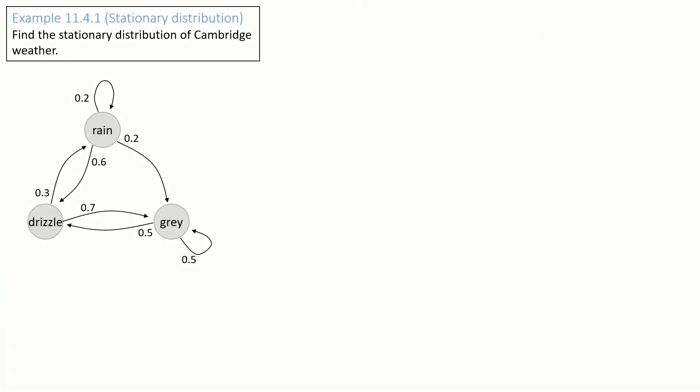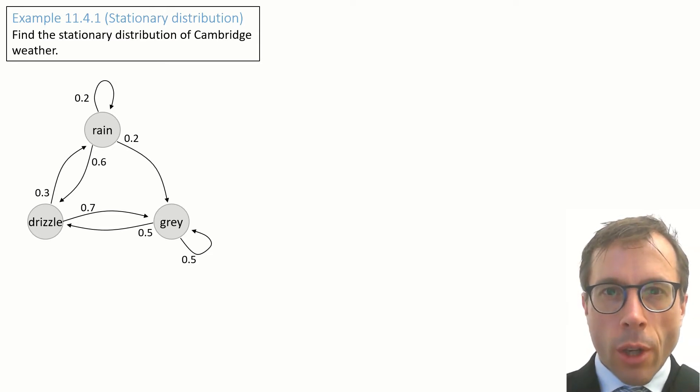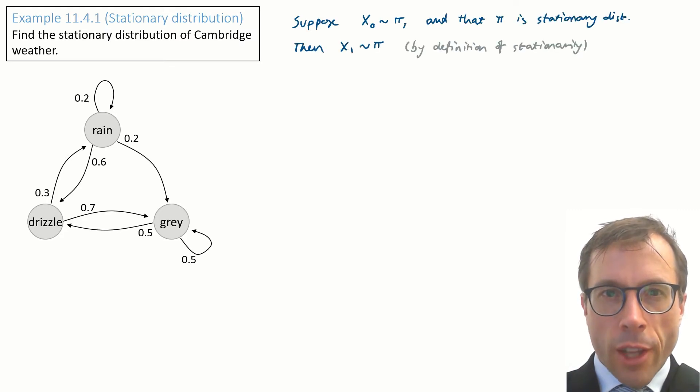Okay, that's the definition of stationarity. Let's see if we can calculate it. Here's a simple Markov chain state space diagram for my Cambridge weather simulator. Let's see if we can derive the stationary distribution using nothing more than that definition of stationarity we just saw. The definition says that if we start at time zero in distribution π, then X₁ will also have distribution π.